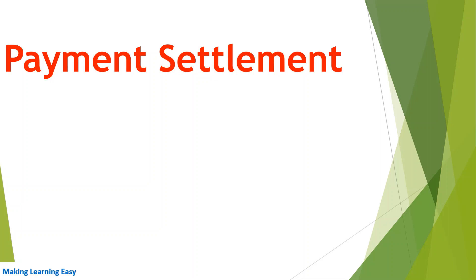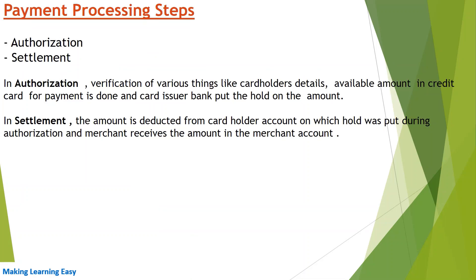Welcome to the session. We are going to discuss the payment settlement process. Before we jump to the payment settlement process, let's quickly see payment processing steps. Payment processing from a credit card or debit card happens in two steps: first is the authorization, second is the settlement. Authorization was already discussed in our previous video, so you can check the playlist. In authorization, verification of various things like cardholder details and available amount in the credit card is done.